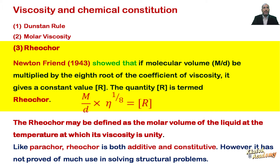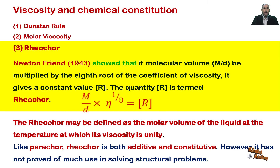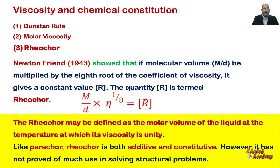In 1943, Newton-Friend showed that if the molecular volume M divided by D is multiplied by the eighth root of the coefficient of viscosity Eta, it gives a constant value R. The quantity R is termed the rheochor. The rheochor may be defined as the molar volume of the liquid at the temperature at which its viscosity is unity.